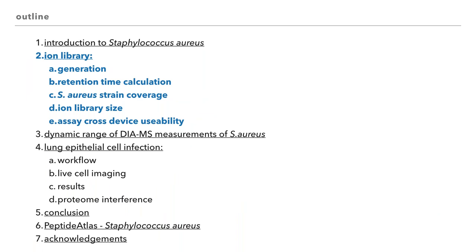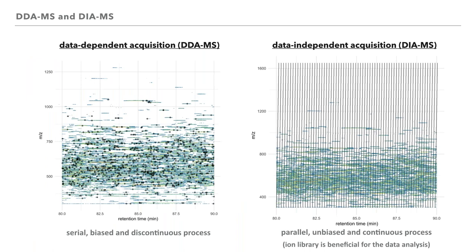In order to study Staphylococcus aureus with DIA-MS mode, it is preferable to use an ion library. I will not introduce DIA-MS any further since I think all of you know DIA-MS and its benefits. In contrast to DDA-MS, DIA-MS is a parallel continuous unbiased process which detects and quantifies more proteins with little variation.